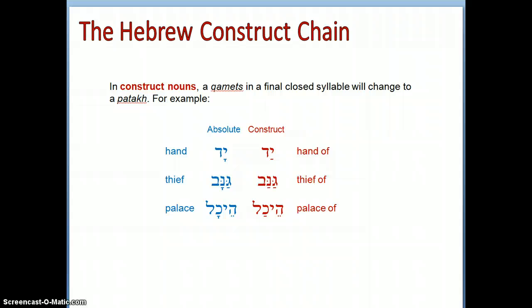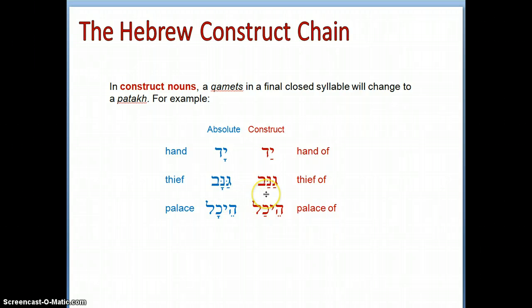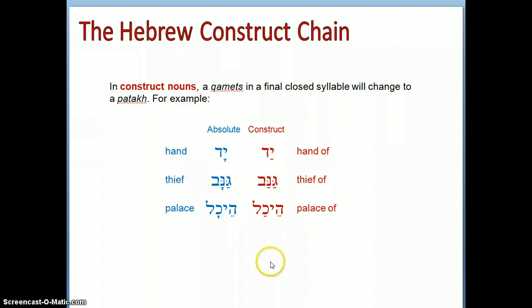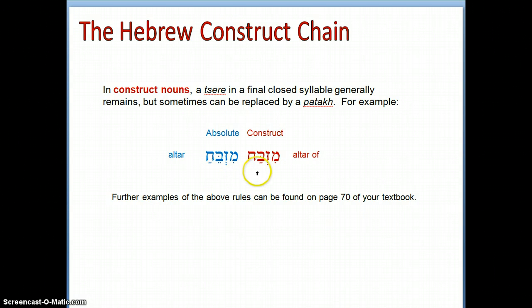In construct nouns, a kamats in a final closed syllable will change to a patah. For example, 'yad' — the kamats changes to a patah in the construct. The same happens with 'ganav' (thief) versus its construct form — the kamats reduces to a patah. Additionally, a tsere in a final closed syllable generally remains, but can sometimes be replaced by a patah. Further examples can be found in the Lambdin textbook on page 70.